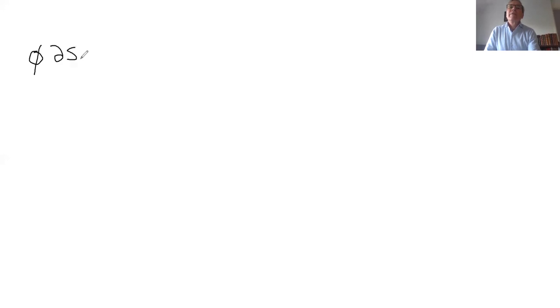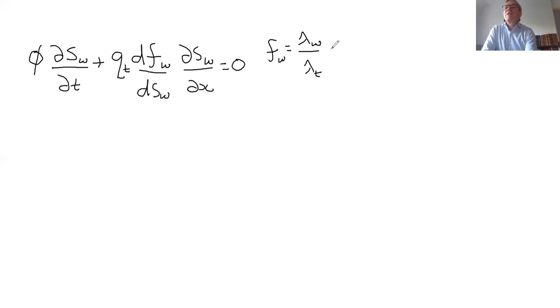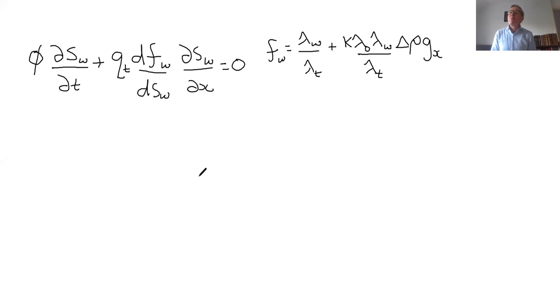Let's start with the equation that we had, which is written as follows: phi times dSW/dT plus qT times dFW/dS — and the fractional flow is just a function of saturation — then dSW/dX equals zero. The fractional flow can be written as a ratio of mobilities. So that's basically how we put together the solution.